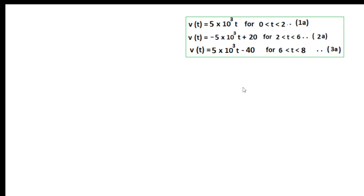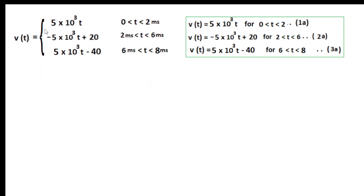So we now have these three equations written together: V(t) = 5×10³·t for 0 to 2ms; V(t) = -5×10³·t + 20 for 2 to 6ms; and V(t) = 5×10³·t - 40 for 6 to 8ms. This is the complete voltage equation.